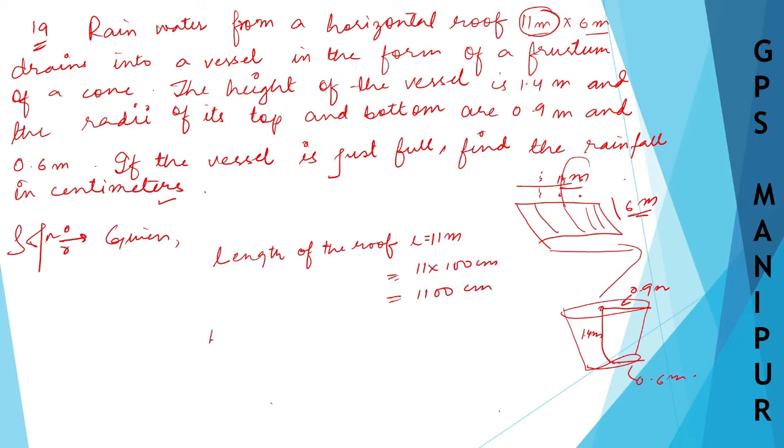So 1100 centimeters. Breadth of the roof is equal to 6 meters, which will be equal to 6 × 100 centimeters, which will be equal to 600 centimeters.